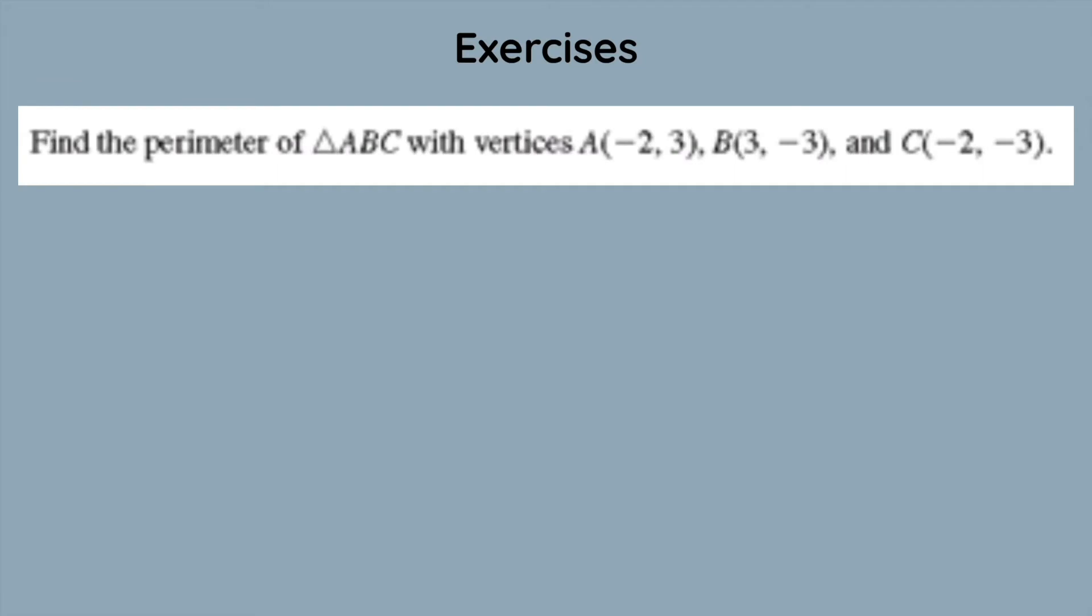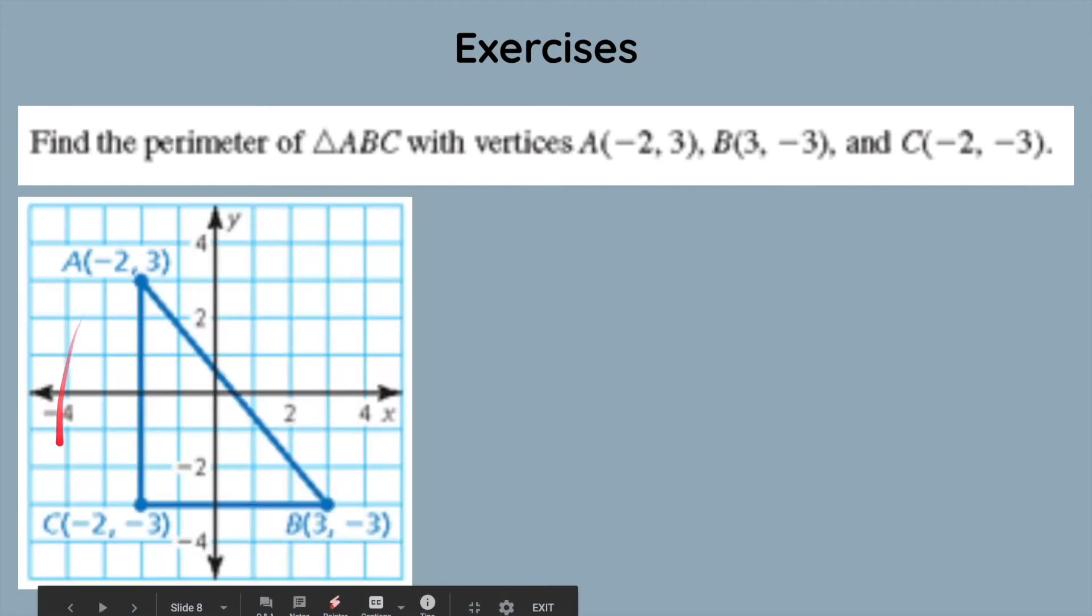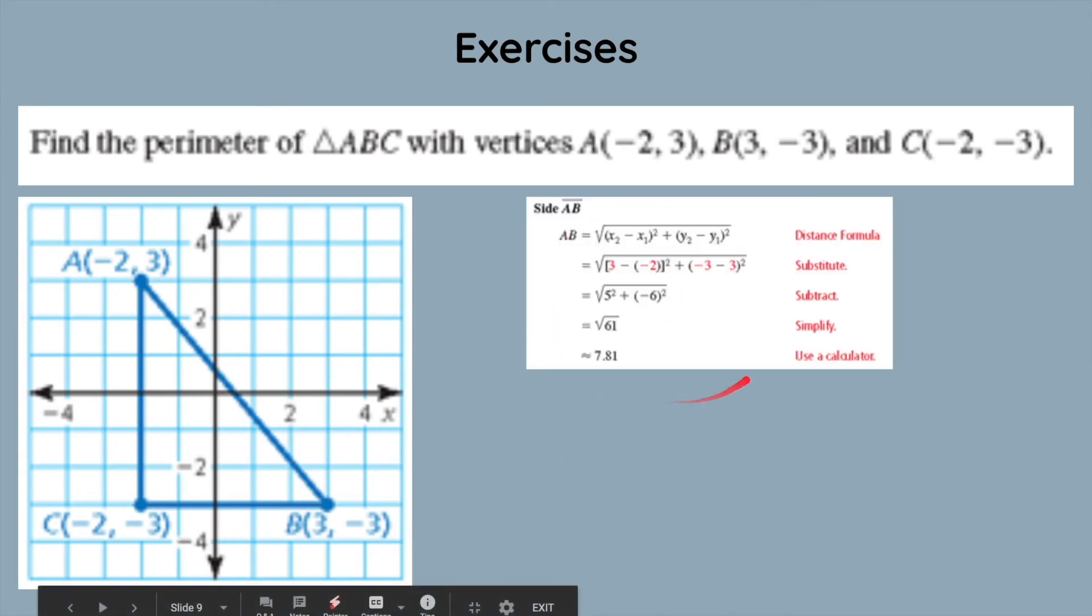Let's move on to some more exercises. This one is find the perimeter of triangle ABC with the vertices A is negative two comma three, B is three comma negative three, and C is negative two comma negative three. What we want to do first is to draw a triangle in the coordinate plane and then find the lengths of each side using the distance formula. Let's plot it on a plane. And now we have a visual representation, which makes it much easier for us to use the distance formula. Let's first start off with finding the length of side AB with the distance formula. Once we do that, we just plug in the coordinates, and in the end, we get around 7.81.